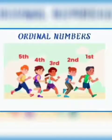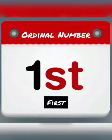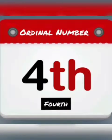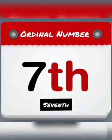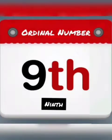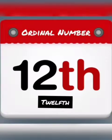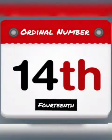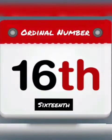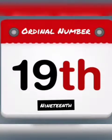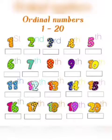Let's start ordinal numbers: 1st, 2nd, 3rd, 4th, 5th, 6th, 7th, 8th, 9th, 10th, 11th, 12th, 13th, 14th, 15th, 16th, 17th, 18th, 19th, and 20th. Students, you are now seeing a worksheet in front of you. You have to write ordinal numbers from 1 to 20.